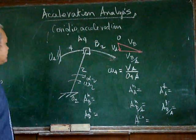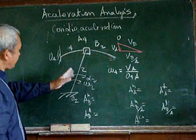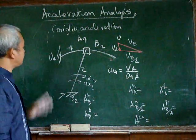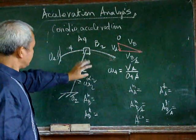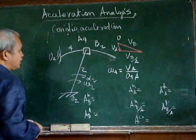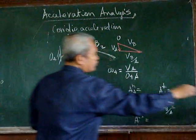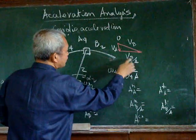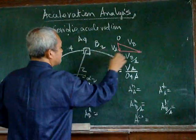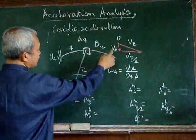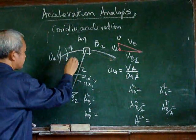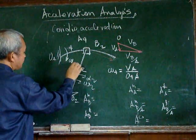Consider this example: body 2 moving and it moves body 4. From the velocity polygon, we can derive the velocity of b with respect to a along that path, and the velocity of a. From the velocity of a, we can determine omega 4, which is the angular velocity of body 4.